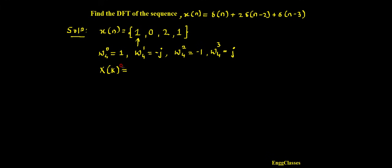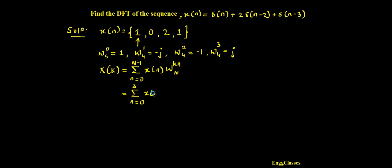Now we can start with the formula: X(k) = Σ [n=0 to N−1] x(n) · W_N^(kn). What is capital N here? It is a four-point DFT, hence N = 4. Therefore the summation goes from n = 0 to 3, with W4^(kn).